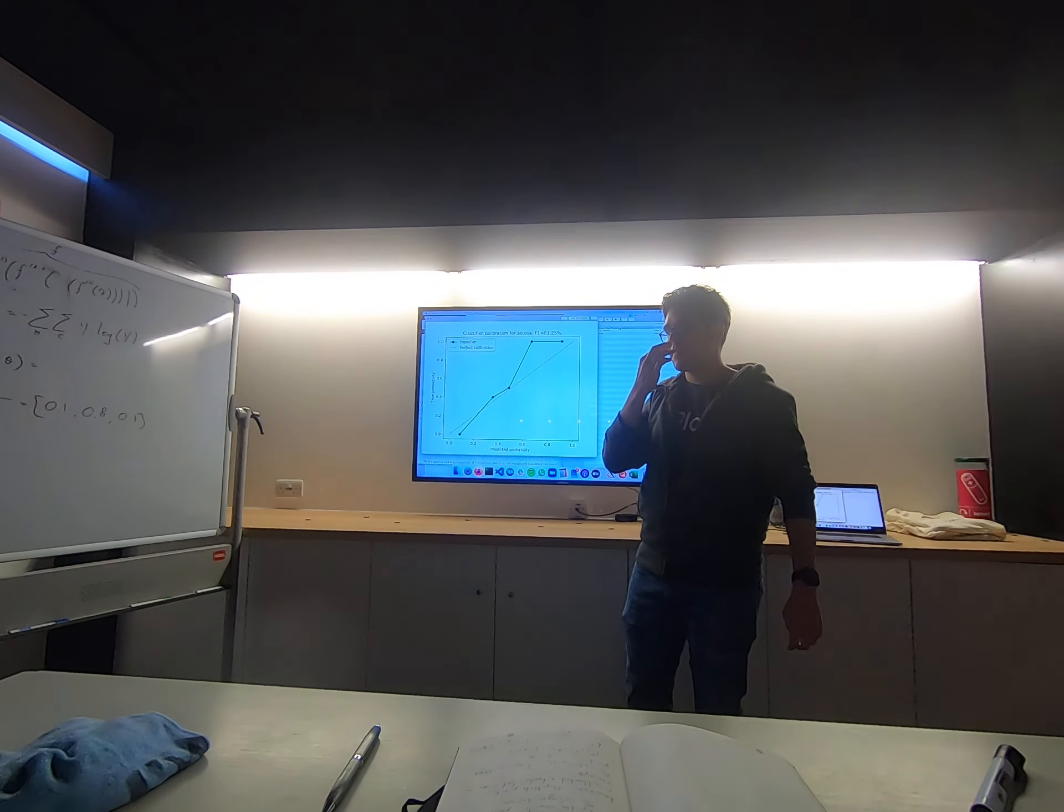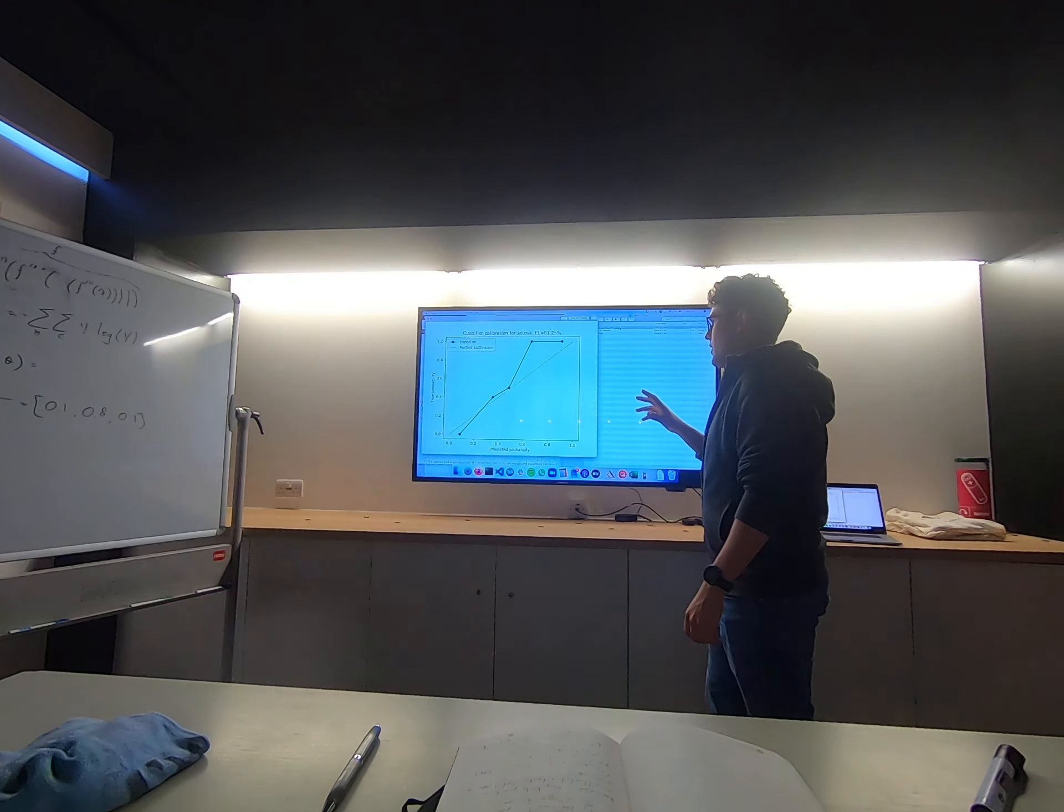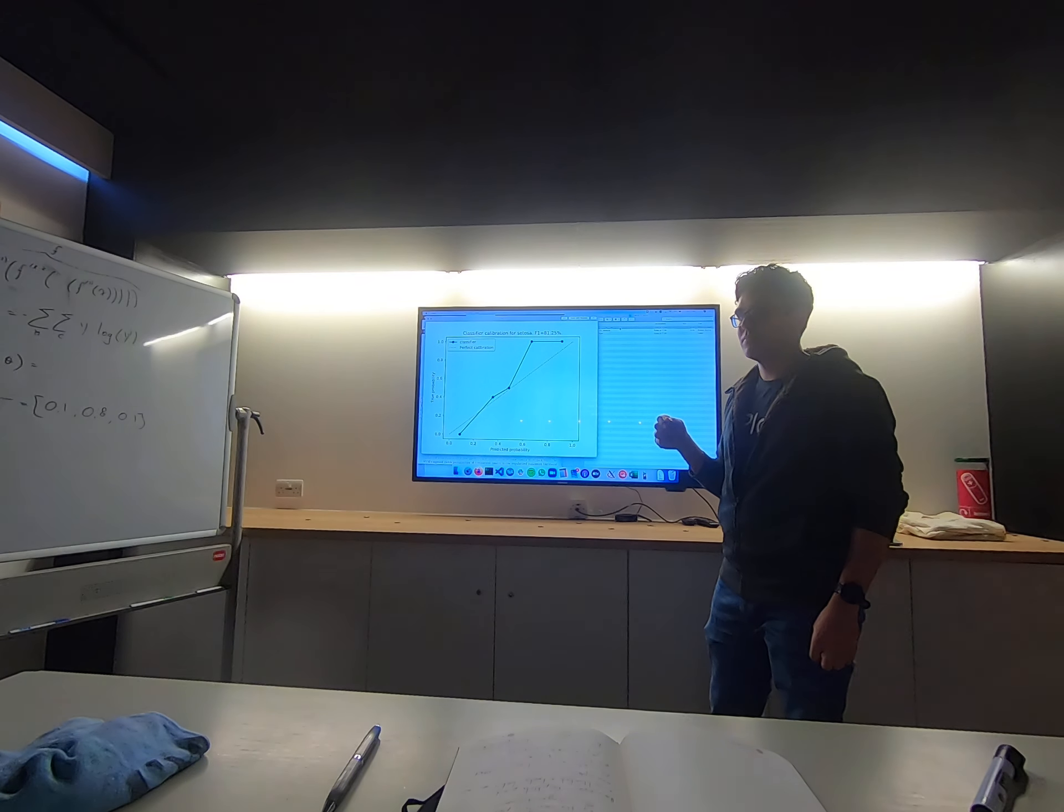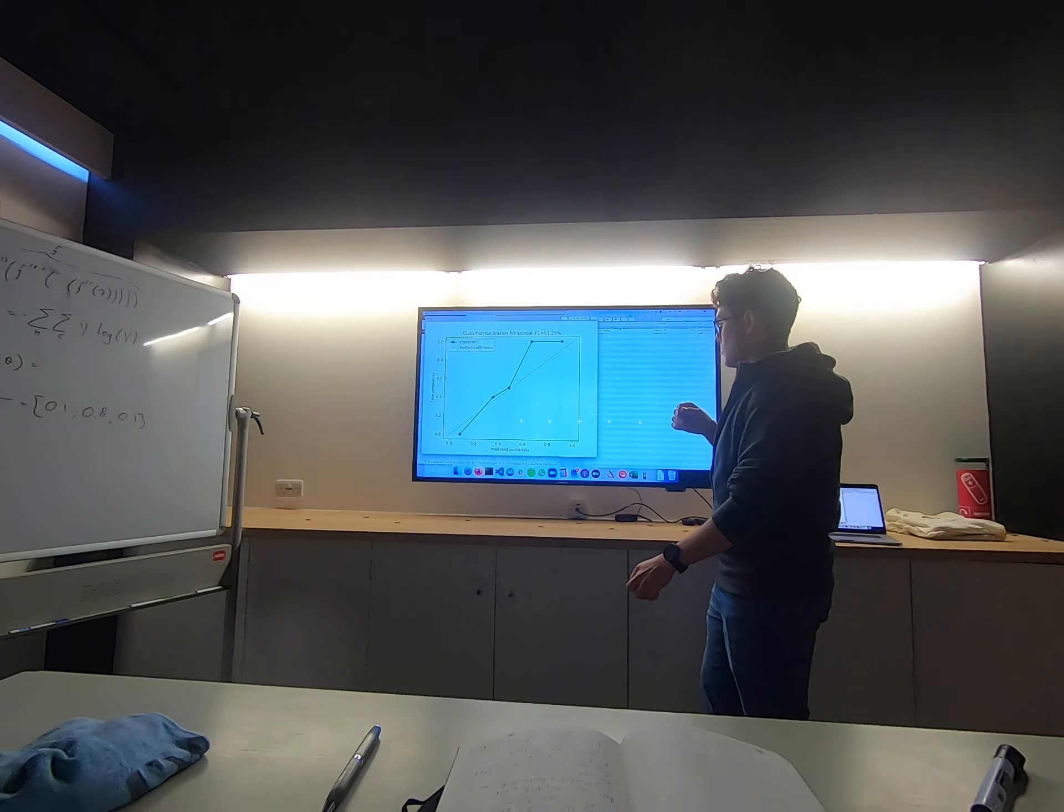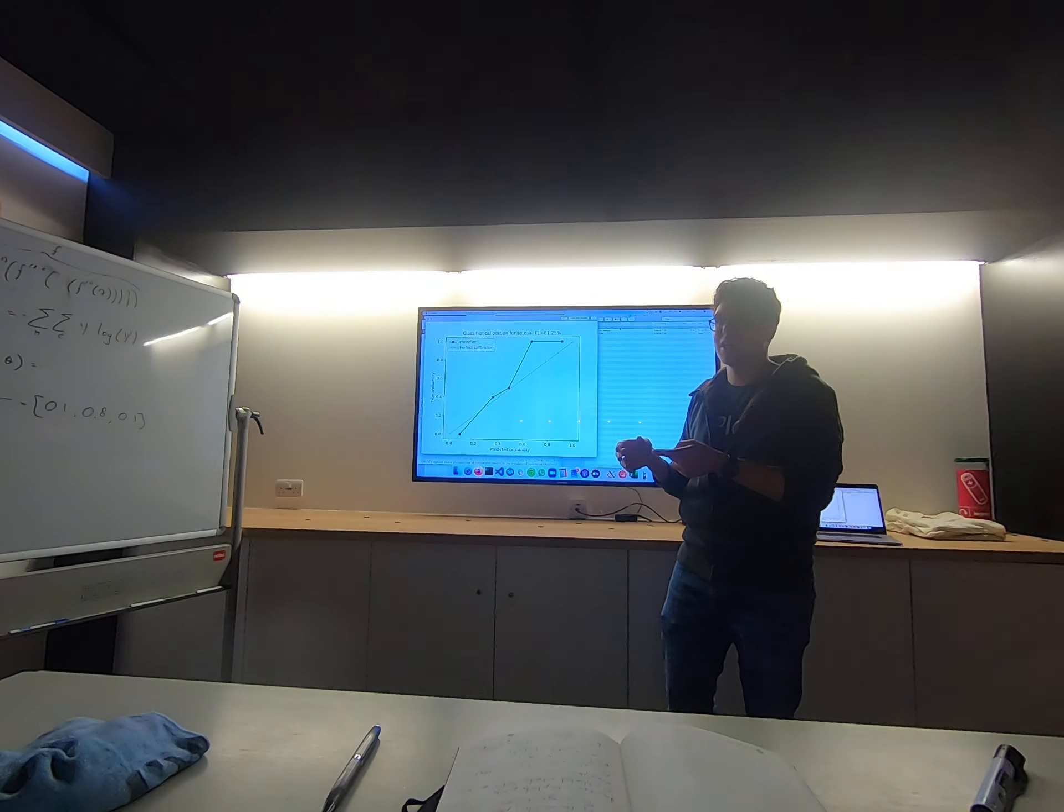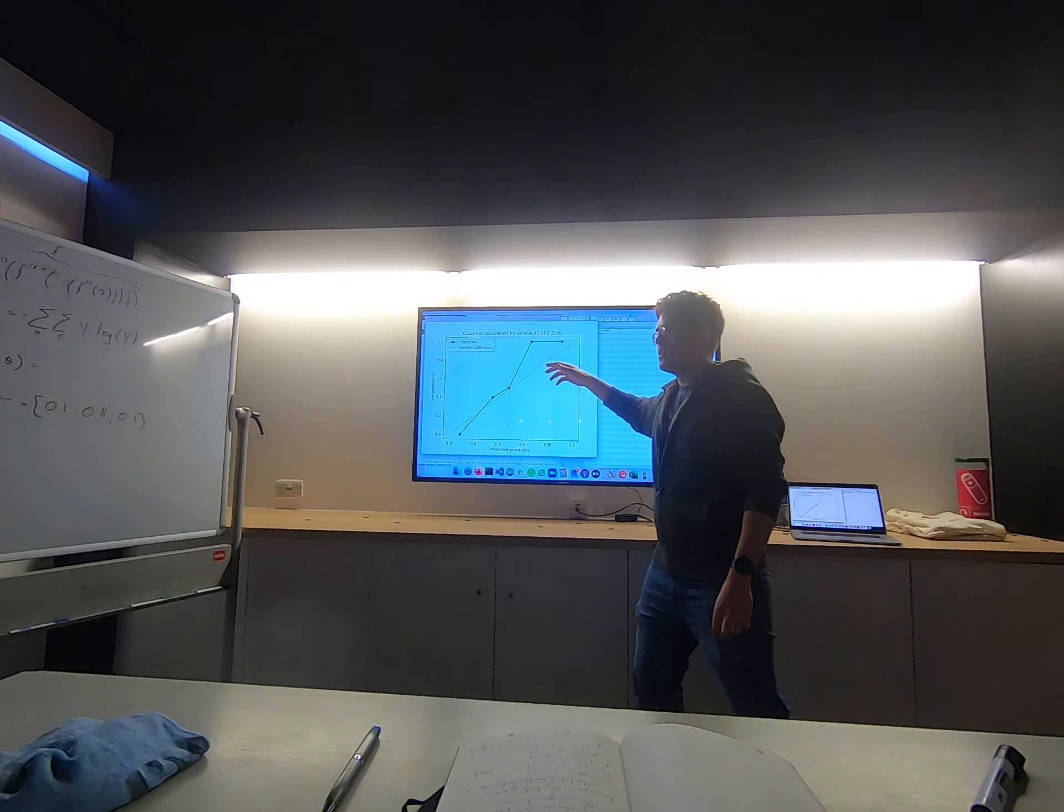But so this is what you would call perfect calibration, okay, which means that you predicted 0.8 and actually 80% were correctly classified. Yes, do we know how many data points in each bucket? We can know, but I don't know it at this point, because you see, if you have a good classifier there might not be many points in the middle.